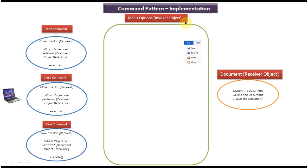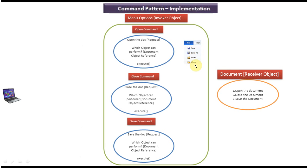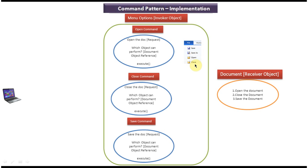The menu option is nothing but an invoker object, which doesn't know how to handle the request. So what it will do is use the command object execute method to perform the operations. Here you can see a file menu — it has save, open and close. These command objects will be sent to the invoker object. Whenever the user clicks on open, it will use the open command object execute method, which uses the document object reference as receiver and calls the open document method to open the document.